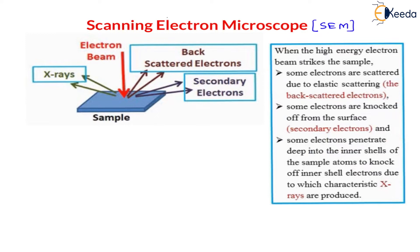In this scanning electron microscope, there is a sample — a very small nanoparticle. The size of this sample is nano-size. Whenever an electron beam collides and strikes on this sample, we will get backscattered electrons, secondary electrons, and X-rays. Let us understand what these phenomena are.